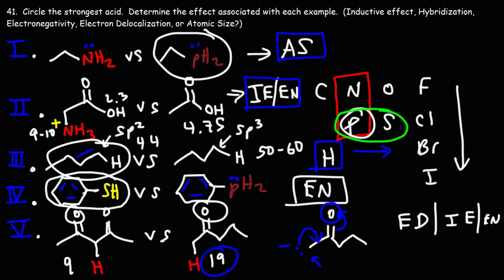The primary answer is electron delocalization, which is equivalent to resonance stabilization of the conjugate base — you can put the negative charge on two oxygen atoms. The secondary reason is the inductive effect, because these are electronegative electron-withdrawing groups. You could put electronegativity as a third reason, but it's minor. Both molecules have the same electronegative atoms; this one just has two of them. So electron delocalization is primary, inductive effect is secondary, and electronegativity contributes as well.